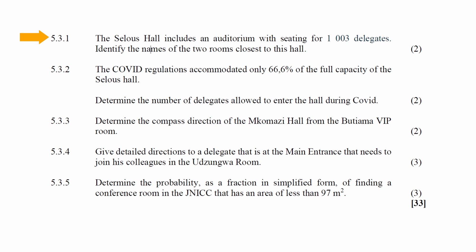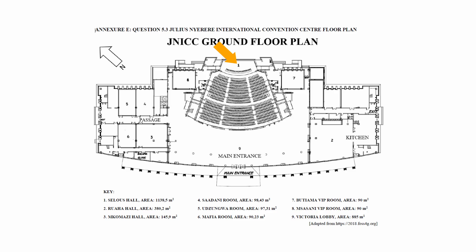In question 5.3.1, the Seleuze Hall includes an auditorium with seating for 1,003 delegates. You are instructed to identify the names of the two rooms closest to the hall from the floor plan in Annexure E. The Seleuze Hall is key number 1, and the two closest rooms are the Butiyama VIP room labeled number 7 and the Msasani VIP room labeled number 8.